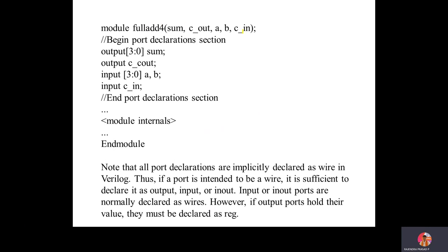Writing 'module full_adder_4': output Sum will be 4-bit, so declared as [3:0]. C_out is a single bit, so no vector declaration. For input, A and B are 4-bit data declared as [3:0], and C_in is a single bit. Then 'endmodule'. In the block diagram, the carry out of the first, second, and third full adder modules will be declared as wires, which should also be kept in mind.